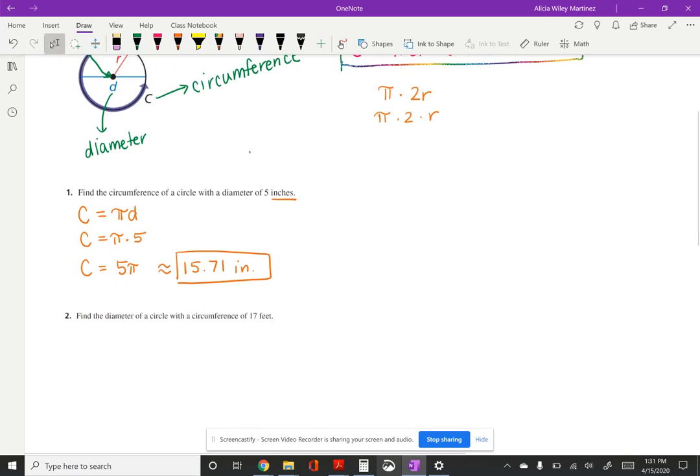Let's look at example two. In example two it says find the diameter of a circle with a circumference of 17 feet. So this is going in the opposite direction. Okay so for this problem again we are going to use C equals π times D since we are trying to find the diameter. Now you could find the radius and at the end just double your answer to get the diameter. Either one is fine.